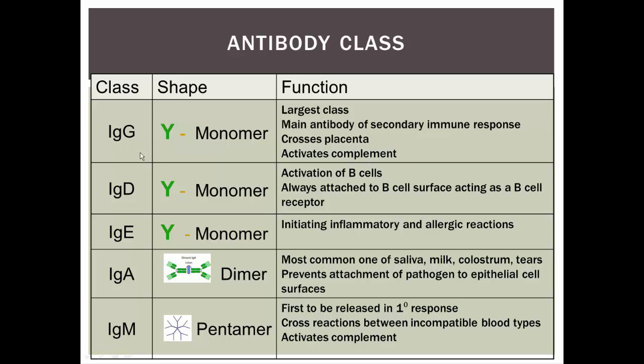IgG has a Y shape — a monomer shape. It's the largest of the classes. It's also the main antibody of the secondary immune response, basically the one that gives us our immunity to disease. It can also cross the placenta, which is why it's responsible for causing hemolytic disease of the newborn, as we discussed in blood typing. It can activate complement. Most antibodies — about 75% to 80% of all antibodies in your blood — are going to be IgG antibodies.